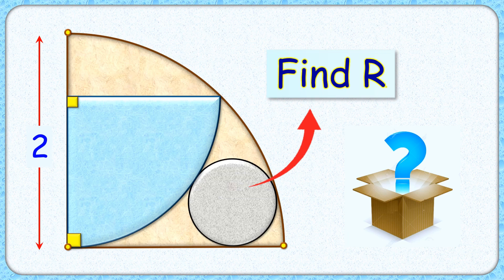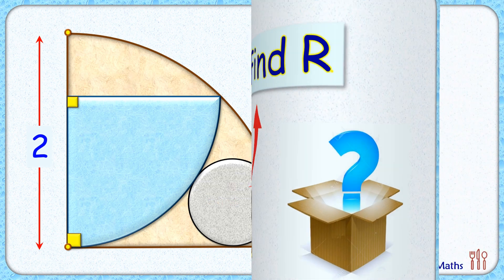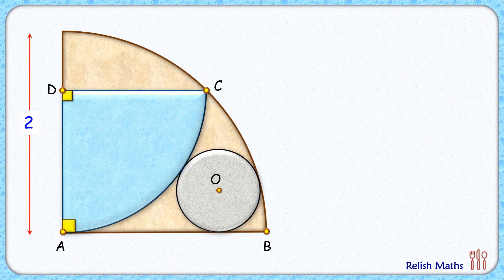This interesting question: we have a quadrant and a circle inside a bigger quadrant with radius 2 cm. The exciting part is that with this limited data we have to find the radius of this circle. Let's check the solution.